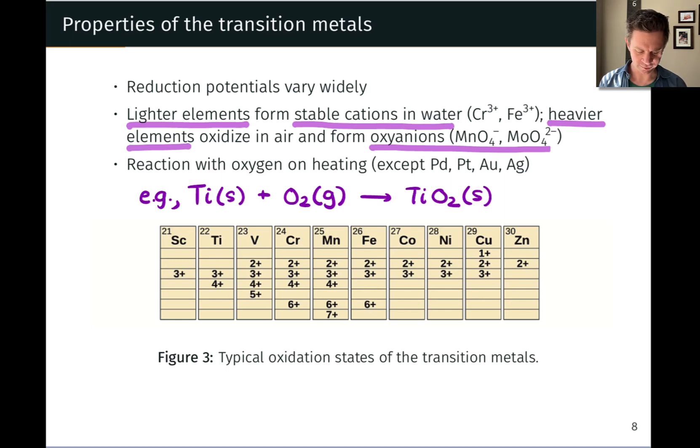We also see as we get toward the center of the transition series that more oxidation states become accessible. Manganese has the most and scandium and zinc on the outside have the least number of oxidation states available to them.